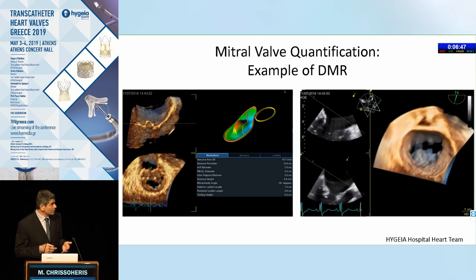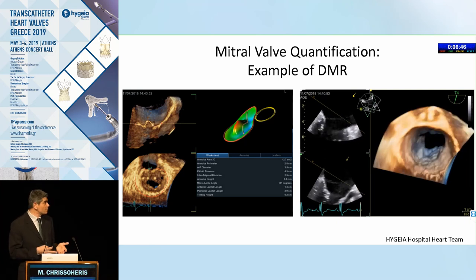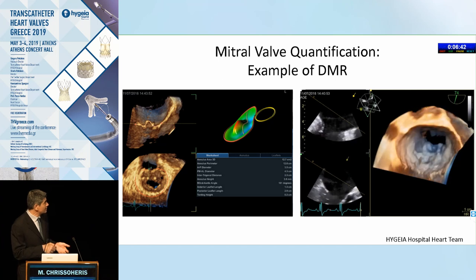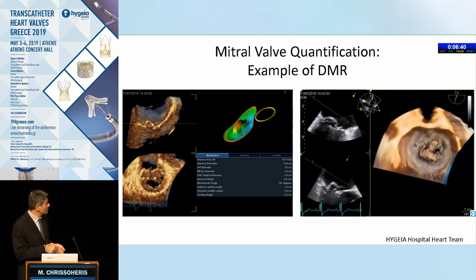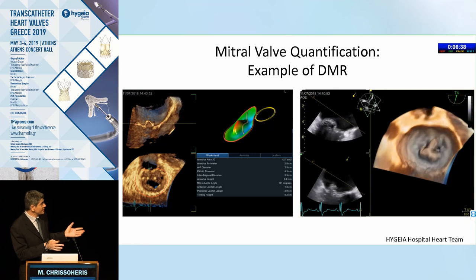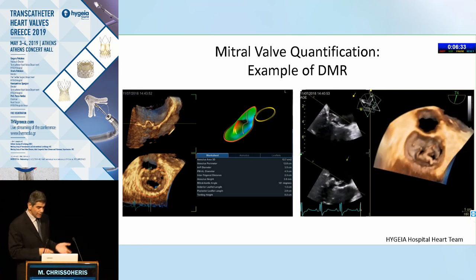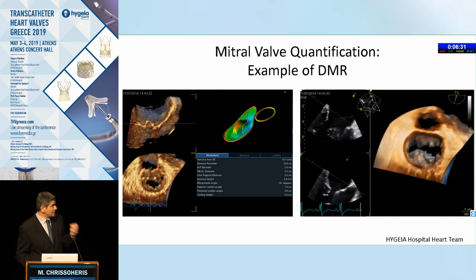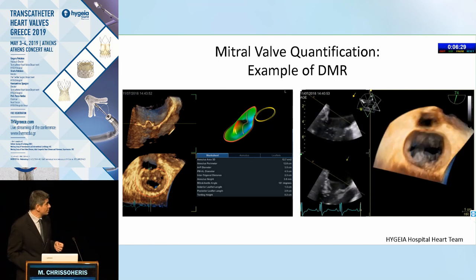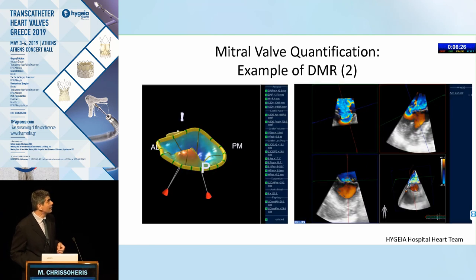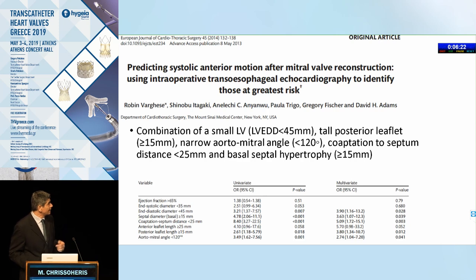Before going to surgery, we can provide the surgeon with multiple measurements from 3D echocardiography: the annulus area, the perimeter of the annulus, the anterior-posterior and septolateral diameters, and the intertrigonal distance. These are detailed parameters that may have a significant impact on the repair procedure.